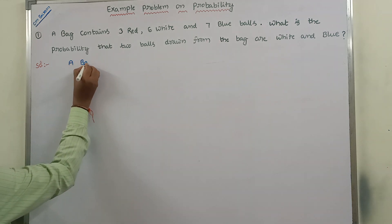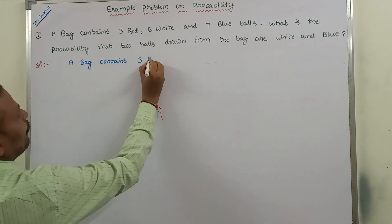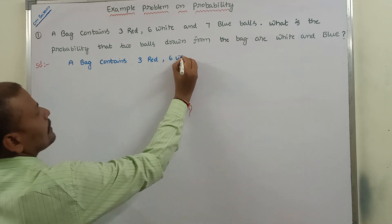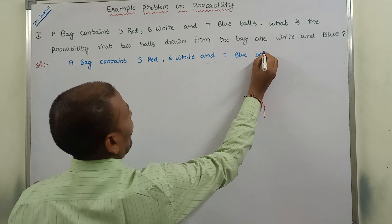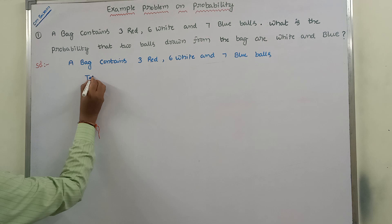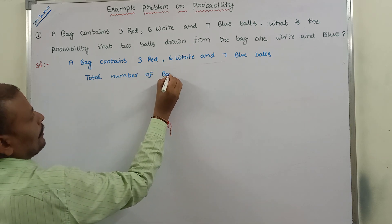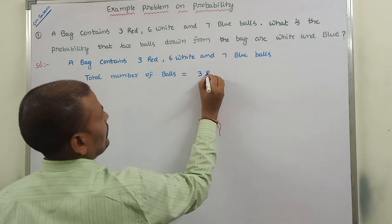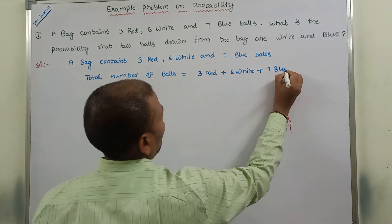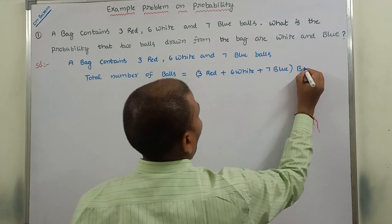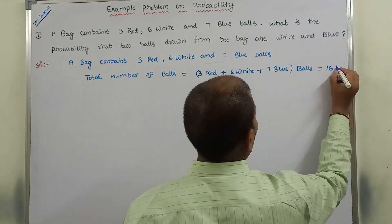A bag contains three red balls, six white balls and seven blue balls. So, total number of balls is equal to three red plus six white plus seven blue, which is three plus six — nine — plus seven, equals sixteen. So, total sixteen balls.